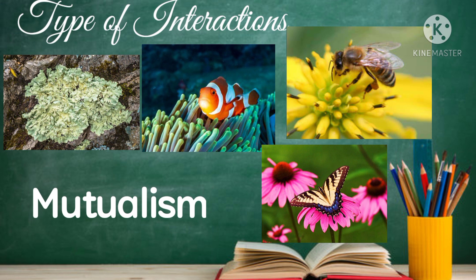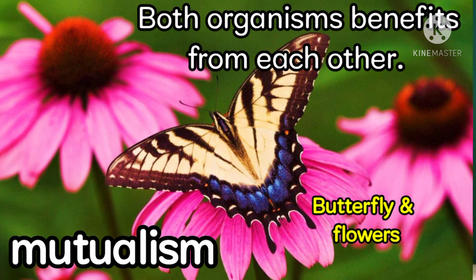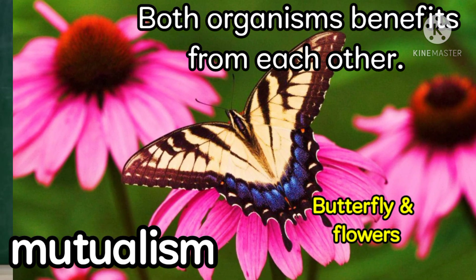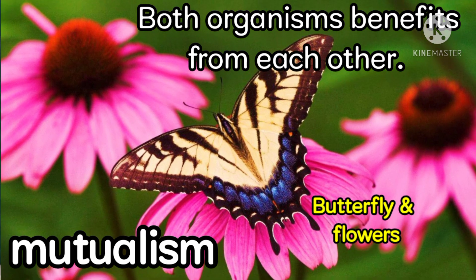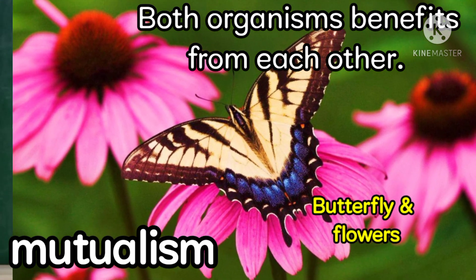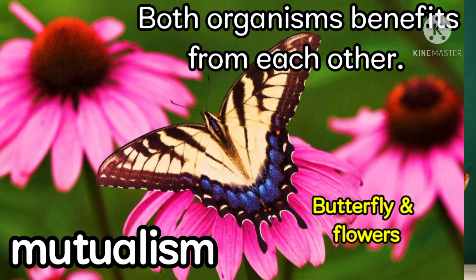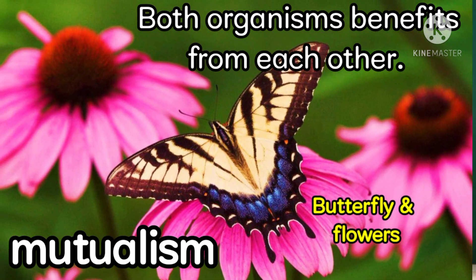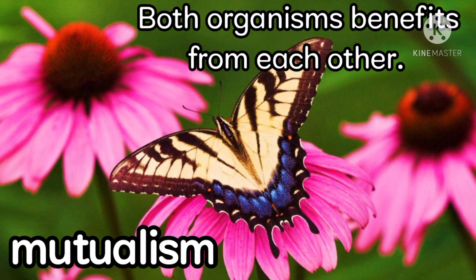The first one is mutualism. Mutualism is a type of interaction in which both organisms benefit from each other. This is also called a symbiotic or give-and-take relationship. For example, a butterfly gets the nectar of the flower as it feeds. The flower is pollinated as the butterfly feeds on the nectar.